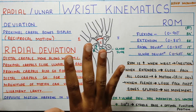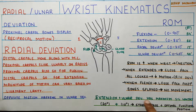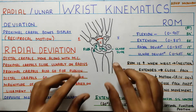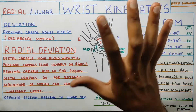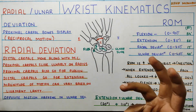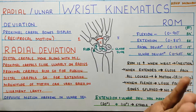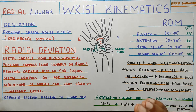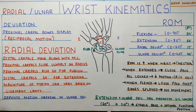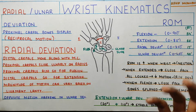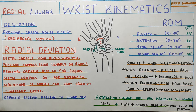When you go into extension and ulnar deviation, there is maximum contact between the scaphoid and lunate, forming a stable base for the hand and fingers to move. Because of this, during surgeries, if the wrist joint needs to be fused, it is fused at 20 degrees of extension and 10 degrees of ulnar deviation, which provides a stable base and optimal functional position.